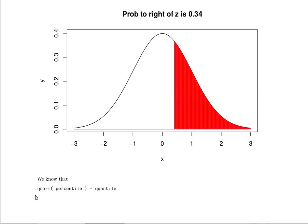We know that if we use the qnorm function, then the qnorm of the percentile—that's the probability to the left—will give us the quantile, the Z that we're looking for. So we need to know this probability to the left.